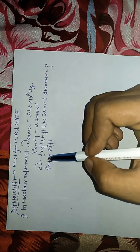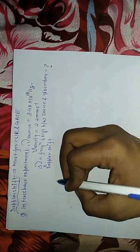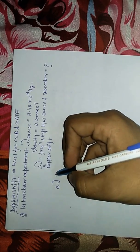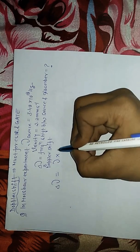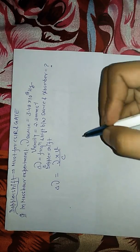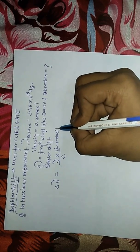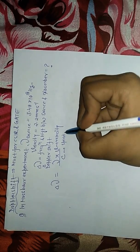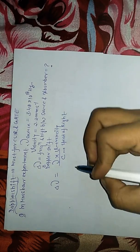Doppler shift is given as frequency of the source into velocity of the source divided by speed of light. This is velocity and this is speed of light. We have to just look at the values.